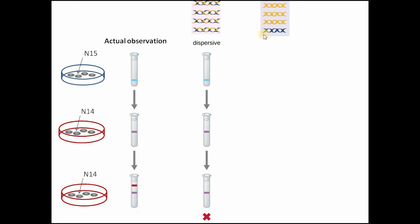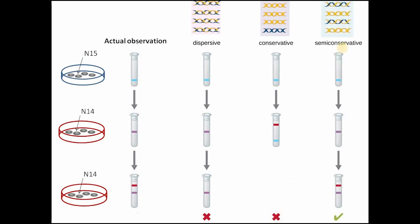The conservative theory predicts that one DNA remains fully heavy (old) and the rest are fully new. Comparing this to Meselson and Stahl's results, we would always get a heavy band and a lighter band from the second generation onward — but no intermediate band was predicted. Since an intermediate band was observed, the conservative theory was also rejected. The semi-conservative theory, however, correctly predicts a heavy band initially, an intermediate band after one generation, and then an intermediate band plus a lighter band in the second generation — matching the actual observations exactly. Therefore, the semi-conservative mode of DNA replication was accepted.